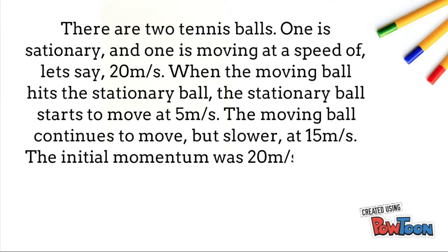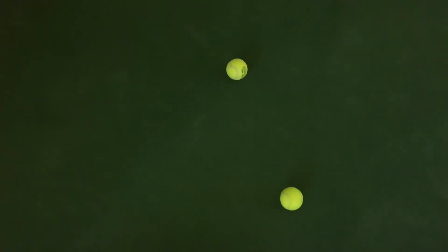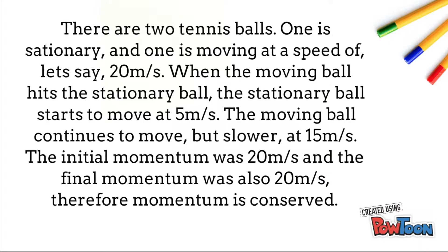The two tennis balls collide and the stationary tennis ball starts to move. The other tennis ball continues moving but is slowed down. The stationary tennis ball is now moving at 5 meters per second and the moving tennis ball is moving at 15 meters per second. The total momentum after the event is still 20 meters per second so momentum is conserved.